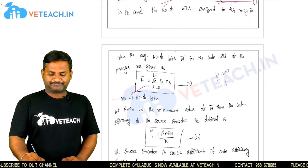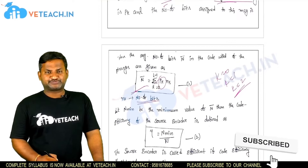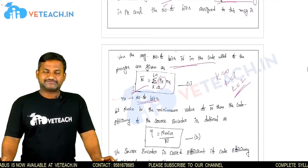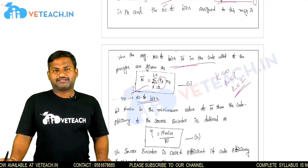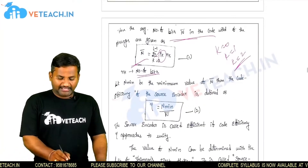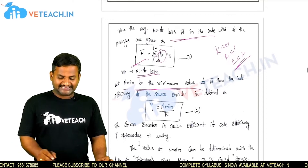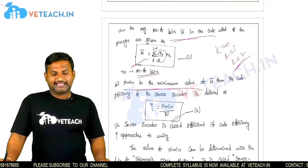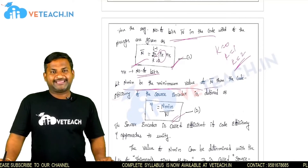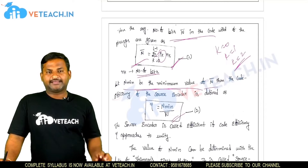Here k equals 0, 1, 2, and so on. nk is the number of bits, and pk is the probability corresponding to those bits. The average number of bits n-bar in the code word is represented as: summation from k=0 to L-1 of pk times nk, where pk is the probability of the kth symbol and nk is the number of bits assigned to the kth symbol. Let n-minimum be the minimum value of n-bar — the average code word length. Efficiency eta equals n-minimum divided by n-bar. From this, n-bar can be calculated.